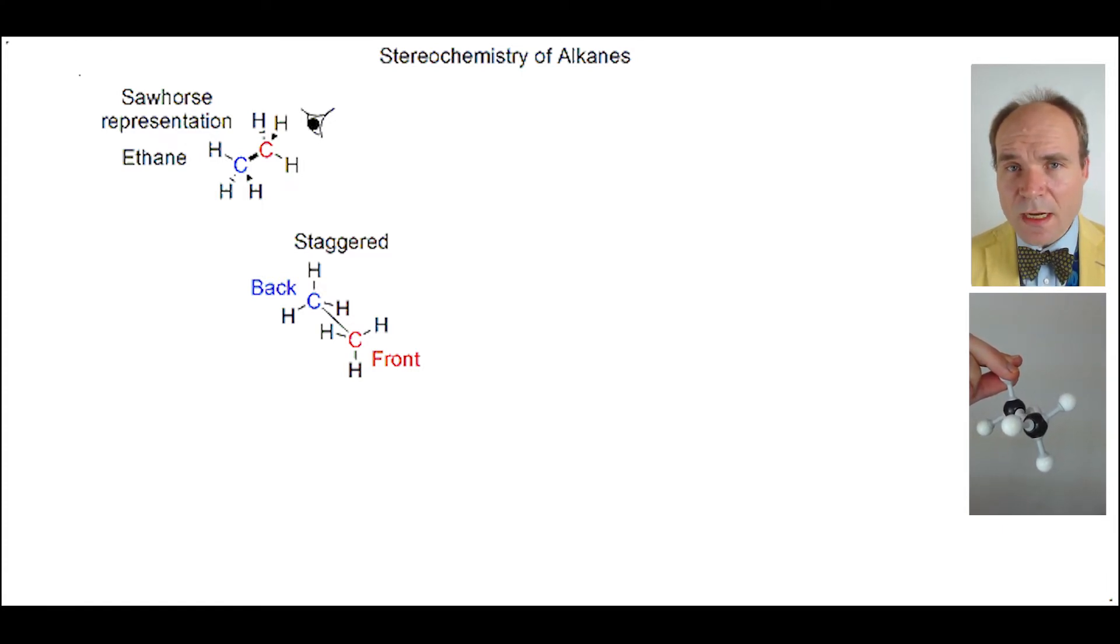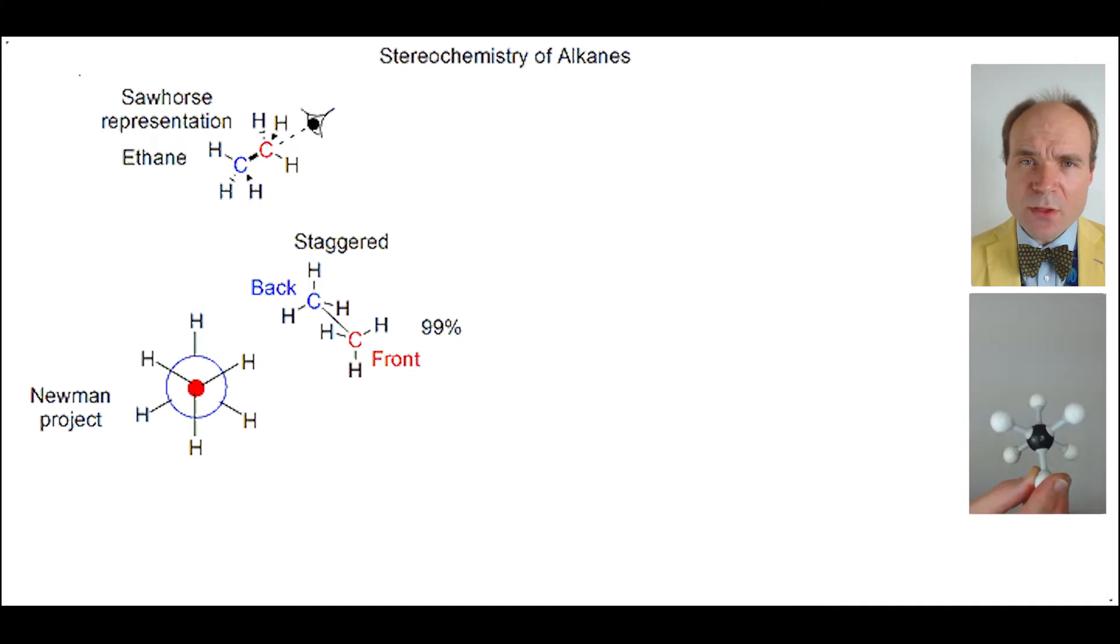We can use our eye even more specifically to look down a carbon-carbon bond. To show this, we draw a dotted line from the eye to the carbon-carbon bond. But how do we depict what we would see? Well, we use a Newman projection.